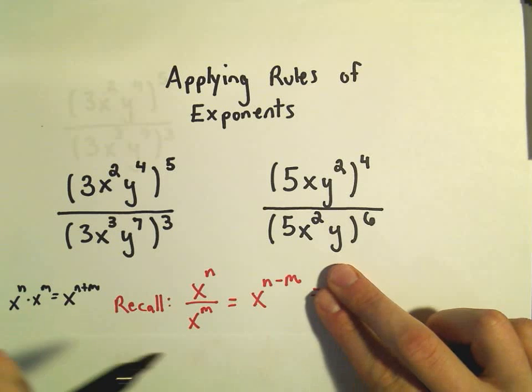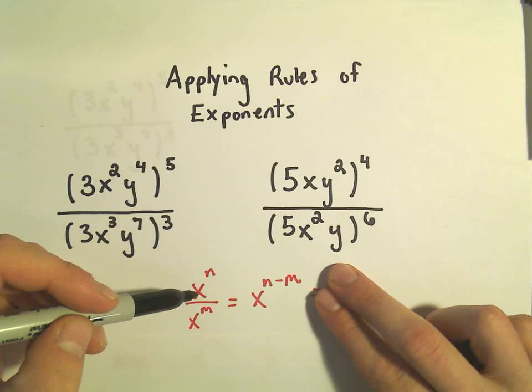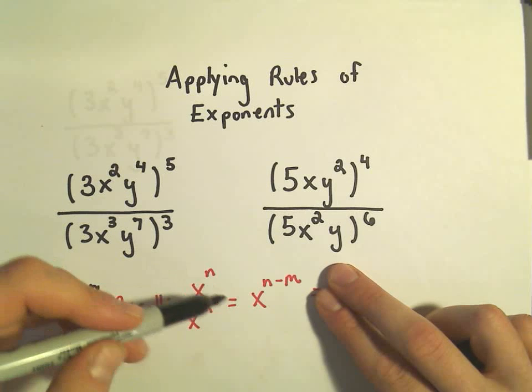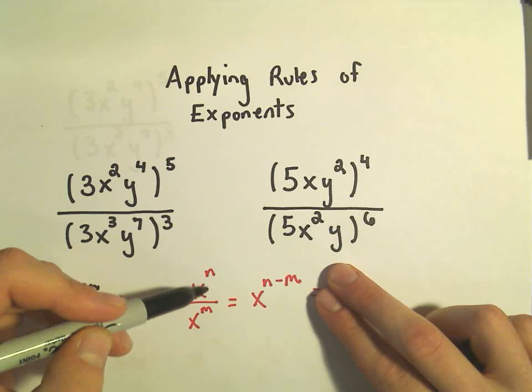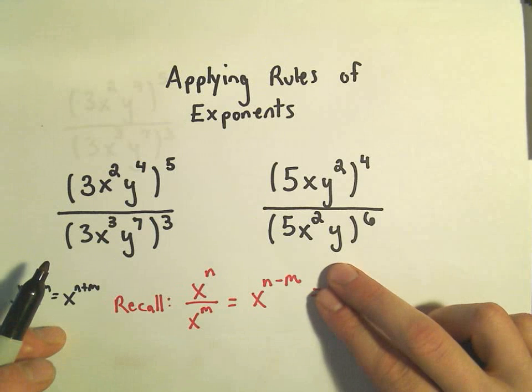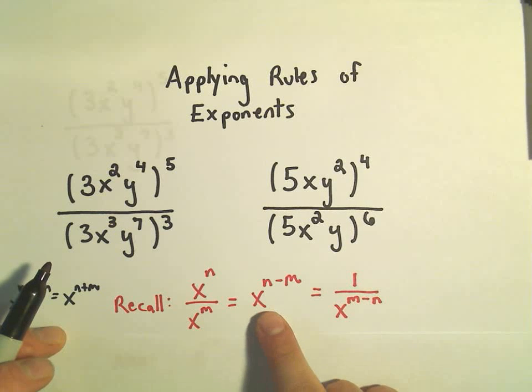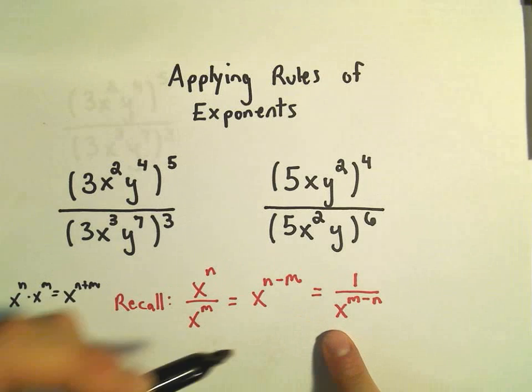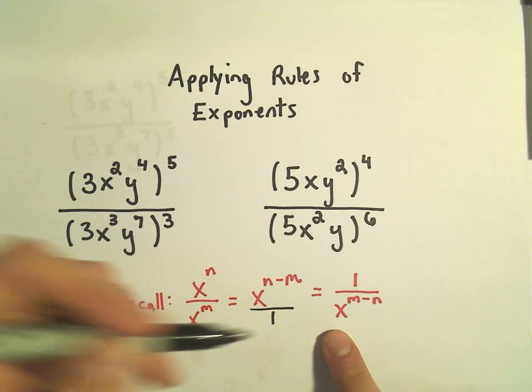So there's two ways to think about it. You can basically combine them by taking, it's the same base, you take the top exponent minus the bottom exponent. That would go in the numerator of the fraction. You can think about all this as being over 1.